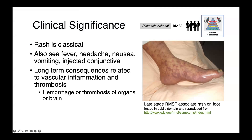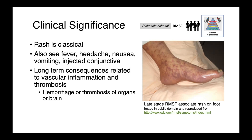We can also see other signs in people like fever, headache, nausea, vomiting, and injected conjunctiva. Long-term sequelae are related to vascular inflammation and thrombosis — hemorrhage and thrombosis of organs or brain — leading to a variety of pathologies depending on the site. This disease is not reportable in Canada, so we don't have good national-level data. In the United States, it does seem increasingly commonly reported: CDC data from 2000 through 2019 shows a large increase from around 500 cases in 2000 up to over 5,000 to 6,000 in the late 2010s.